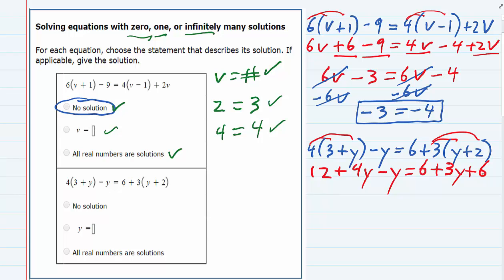And we need to combine like terms. On the left hand side, the 12 comes down, the 4y and the minus 1y combined to be plus 3y. On the right hand side, the numbers six and six, those are like terms, so they combine to be 12, and the 3y comes down.